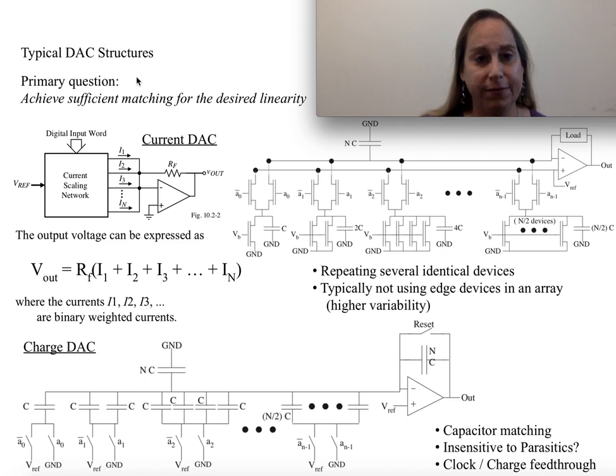Typically, the thing that anytime you build DACs, the thing you have to understand that's critical with all of them, and I will keep saying this probably every single video related to DACs and ADCs, is that matching is the critical thing for getting the linearity, for getting the linearity in the bits that you're looking for. Matching is everything.